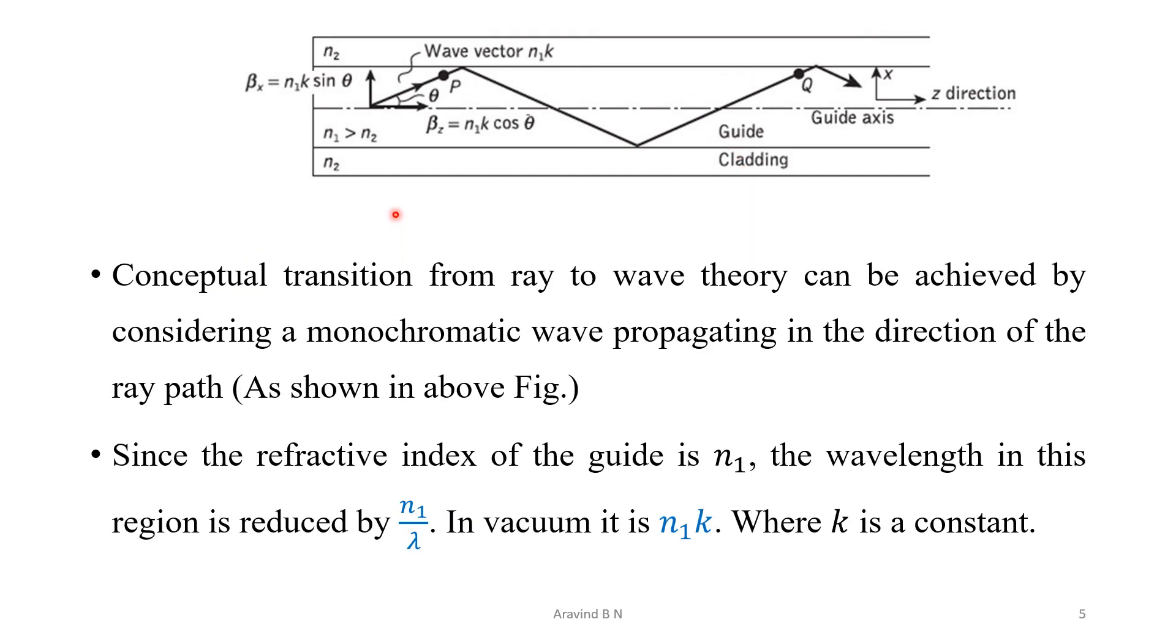Let us consider a monochromatic wave traveling in the direction of the ray path. Now, since the refractive index of this guide region is equal to n1, the wavelength in this region is reduced by the term n1 by lambda. In case of vacuum, this value will be equal to n1 into k, where k is a constant value.